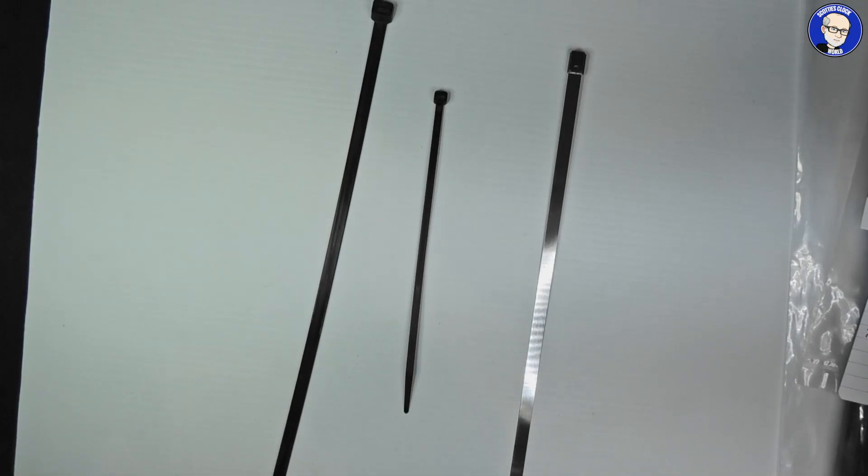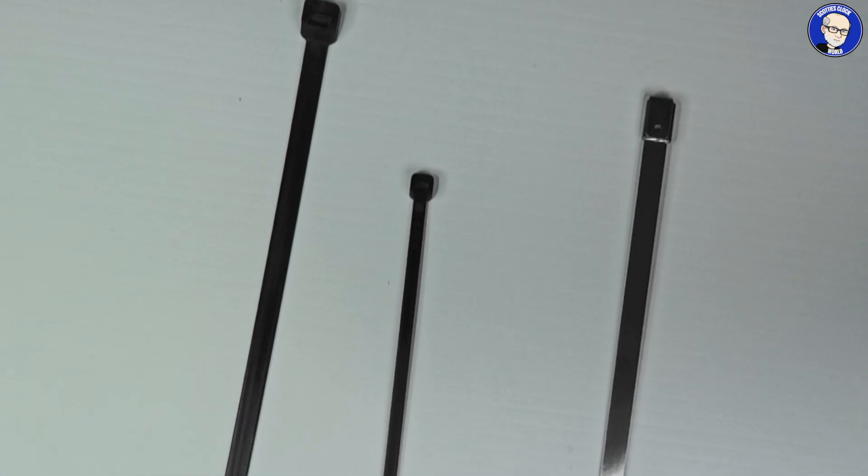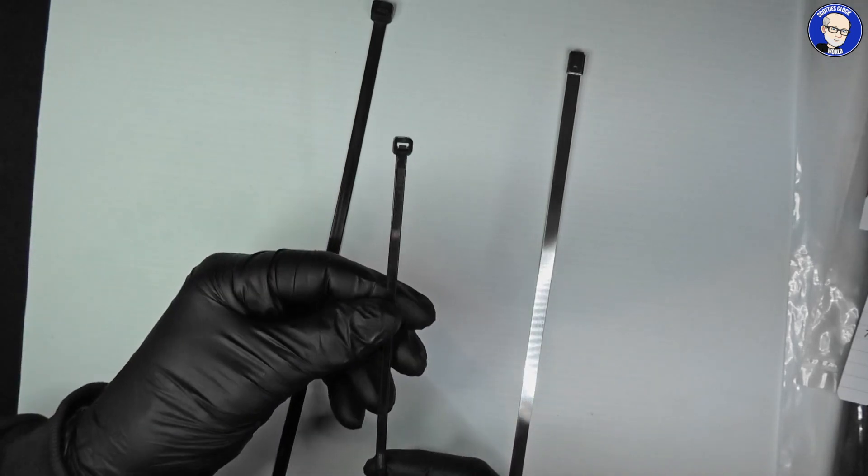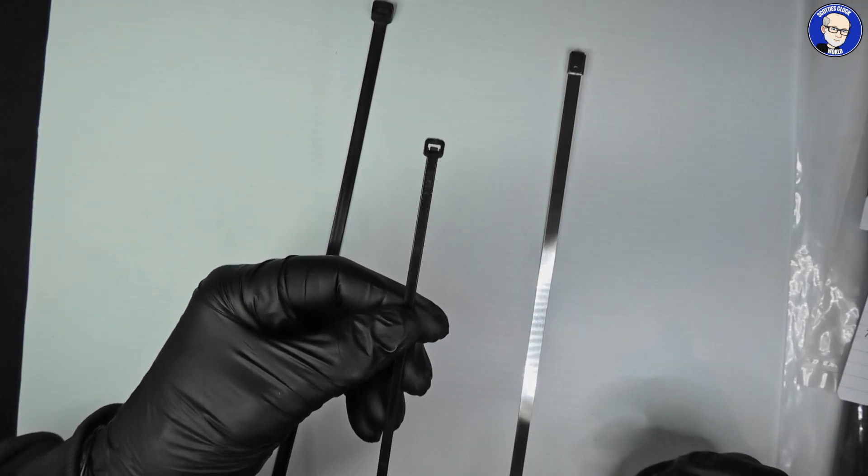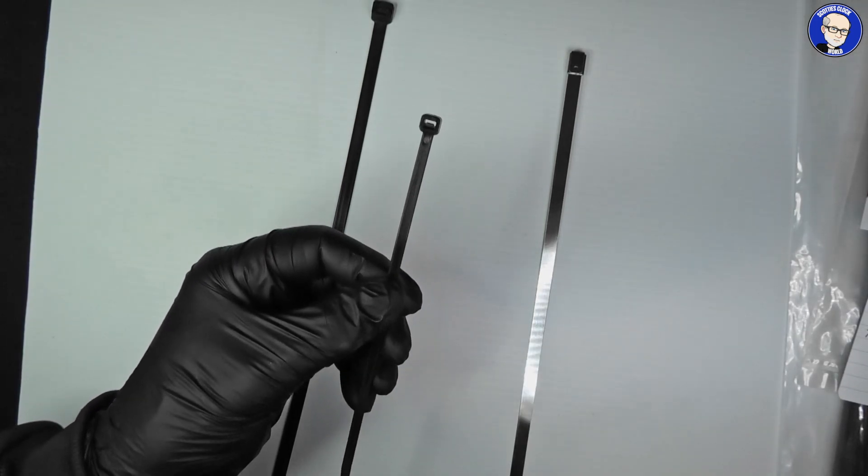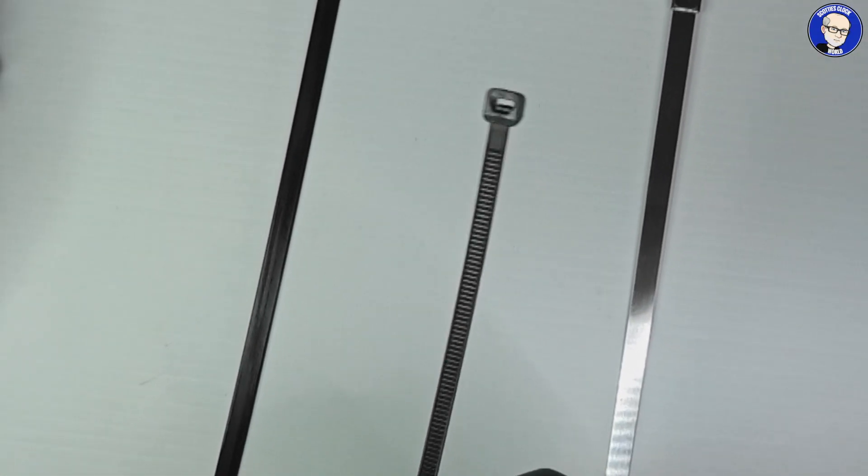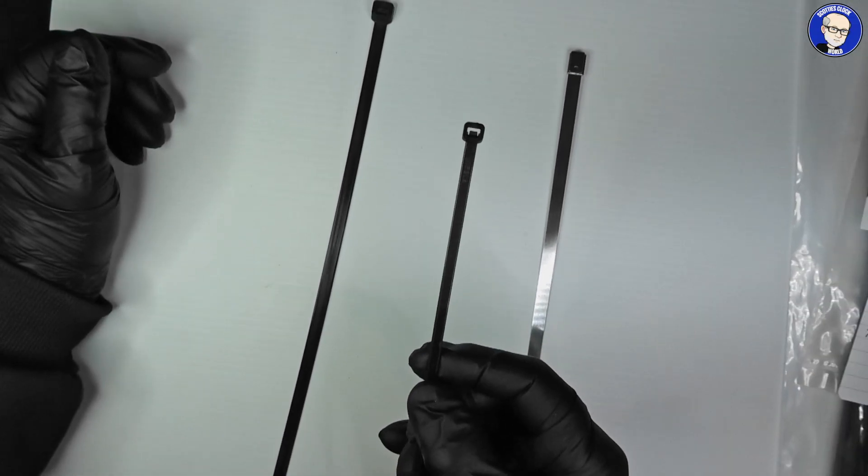Cable ties, electrical cable ties, come in many sizes. This one here is 4.6 millimeters across, and this cable tie should never be used when dealing with clock mainsprings because they contain a serious amount of energy in them.